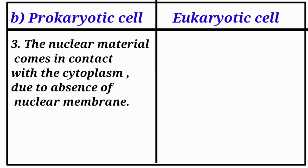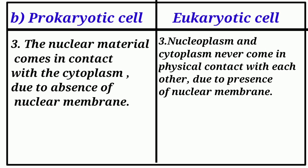Prokaryotic cell: The nuclear material comes in contact with the cytoplasma due to absence of nuclear membrane. The nucleoplasma and the cytoplasma never come in physical contact with each other due to presence of nuclear membrane.